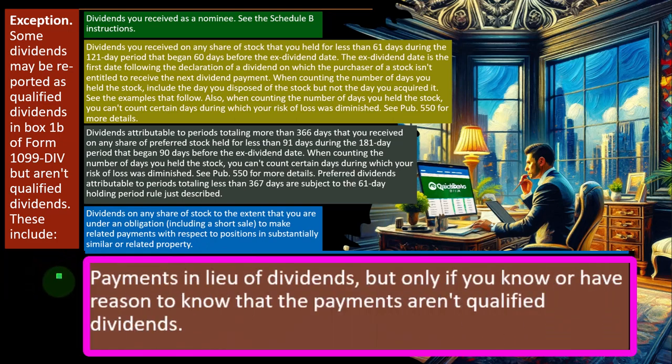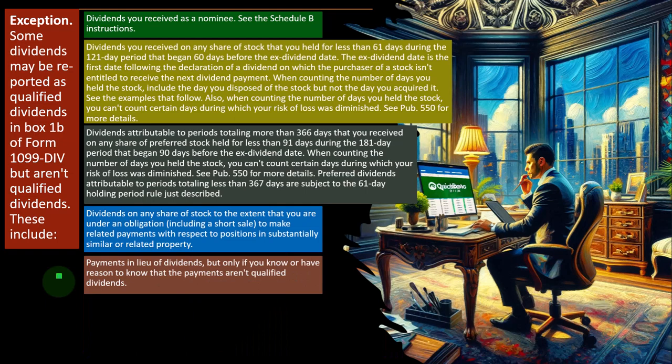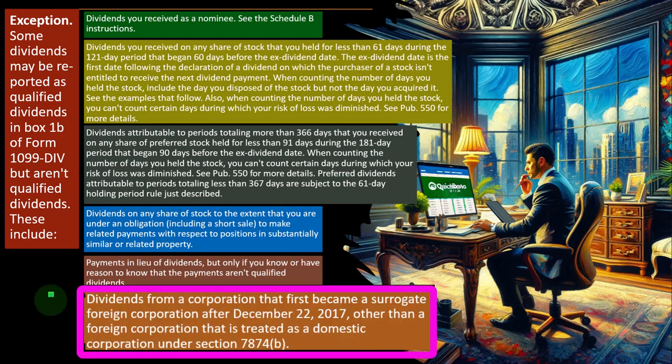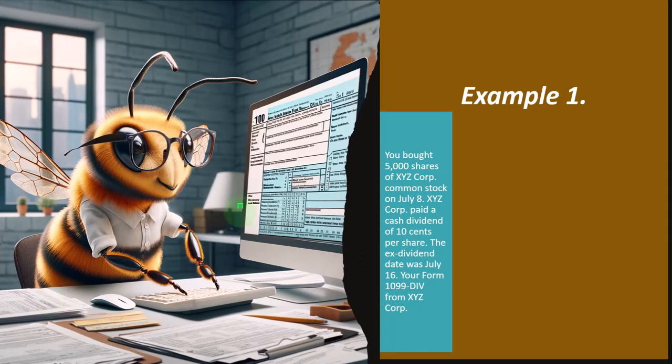Dividends on any share of stock where you are under an obligation — including a short sale — to make related payments on substantially similar or related property are not qualified. That would typically apply to day traders who are trading individual stocks constantly, not normal investors investing mainly in mutual funds. Dividends from a corporation that first became a surrogate foreign corporation after December 22, 2017 — other than a foreign corporation treated as domestic under Section 7874(b) — also do not qualify.